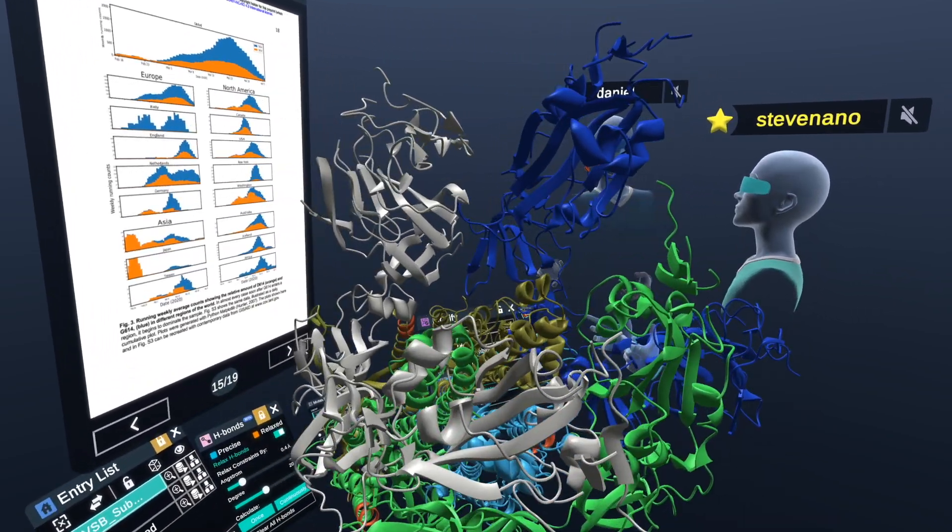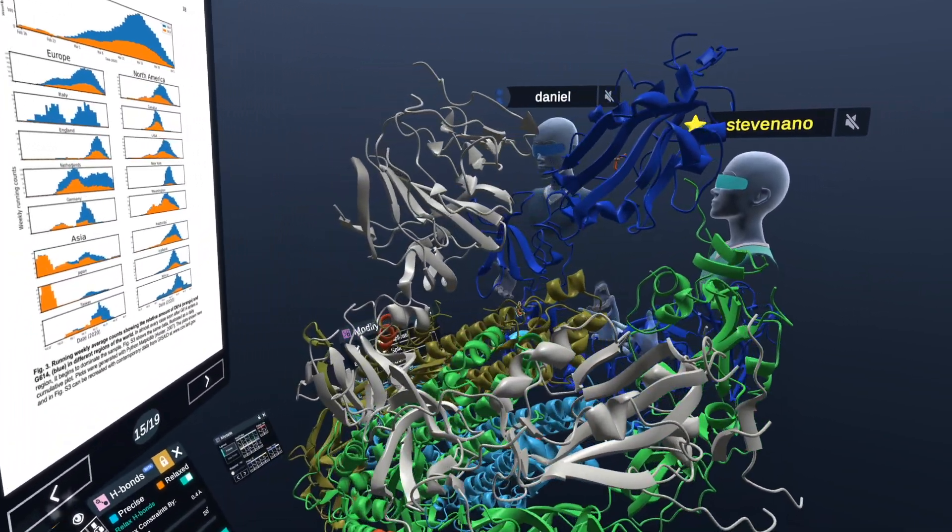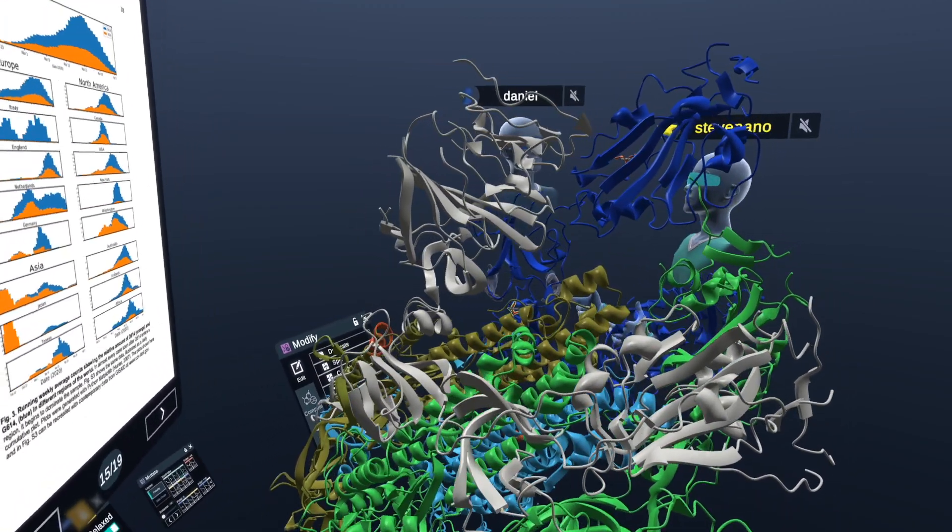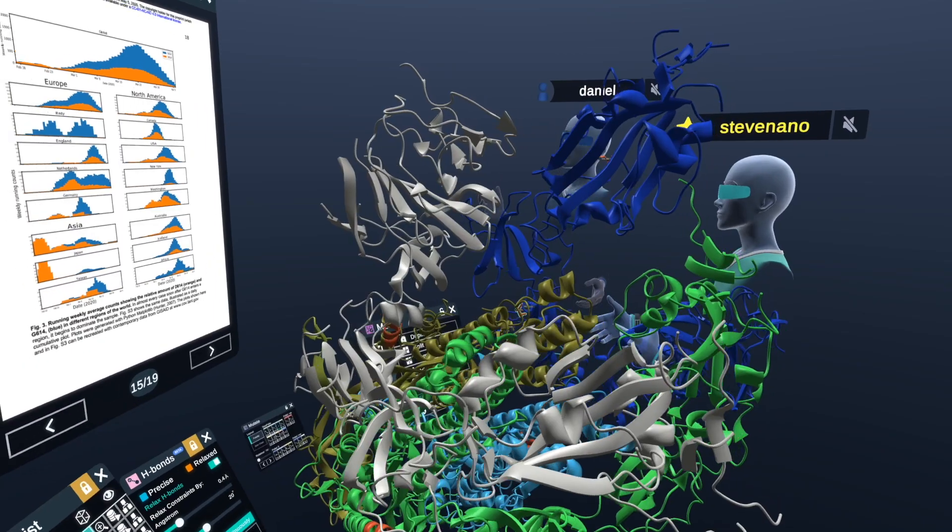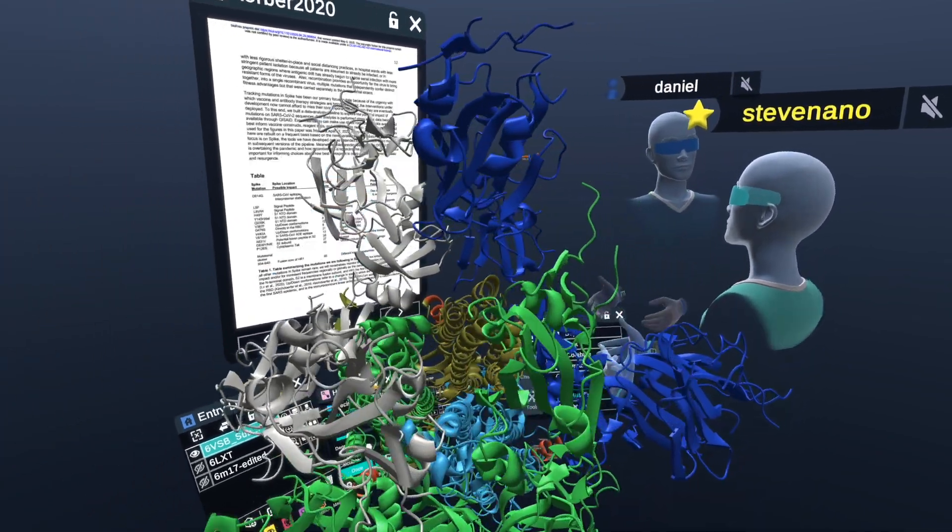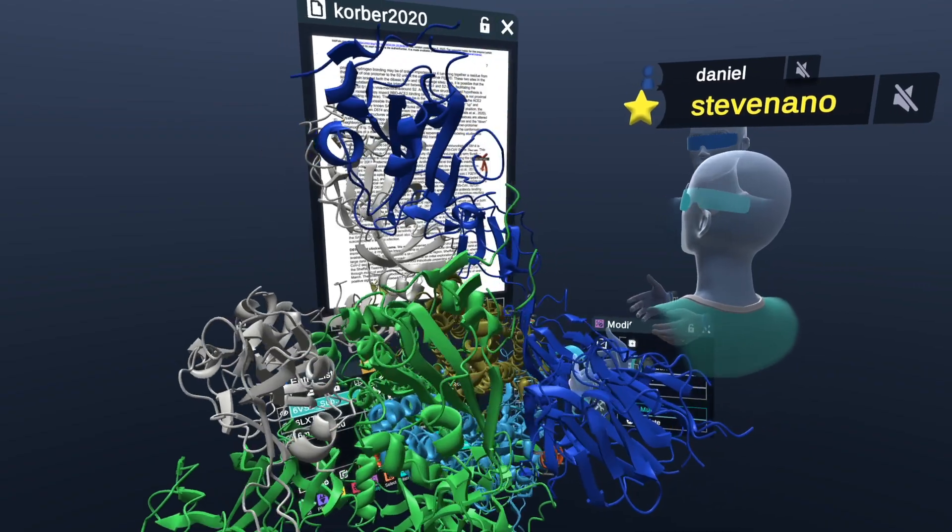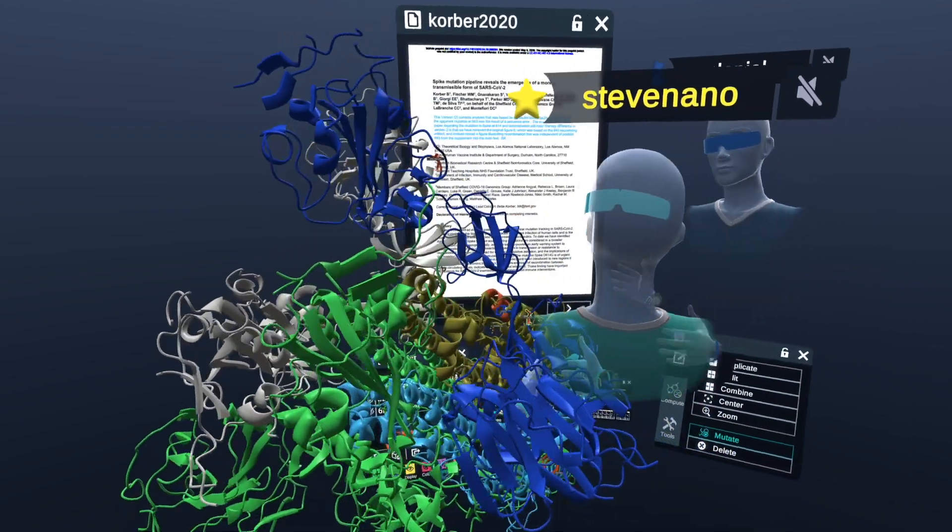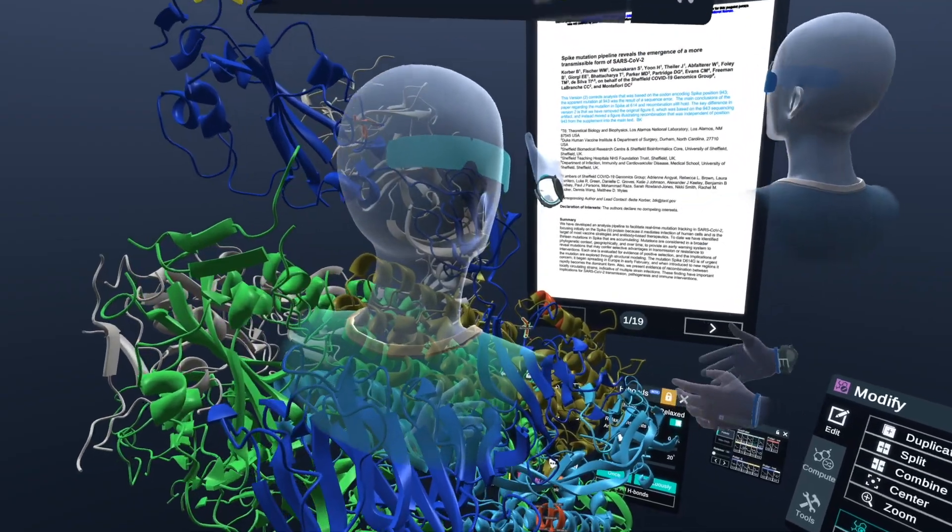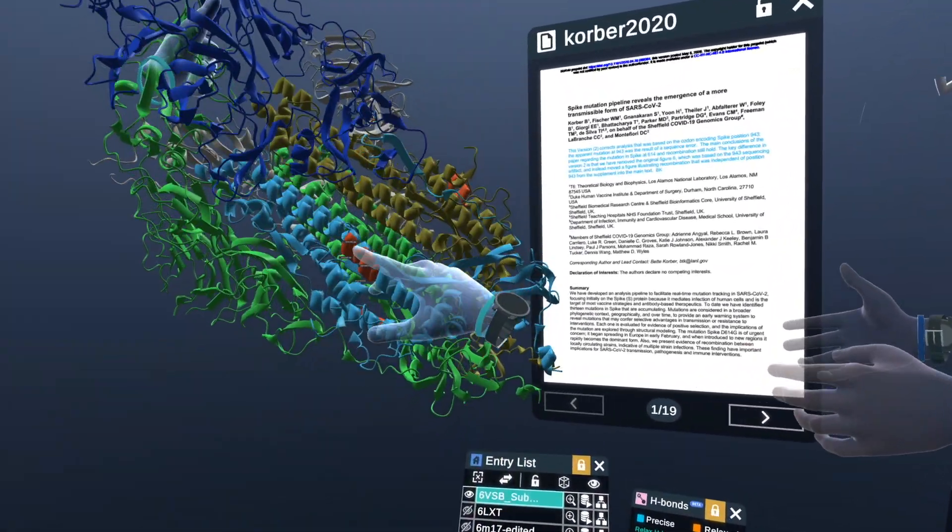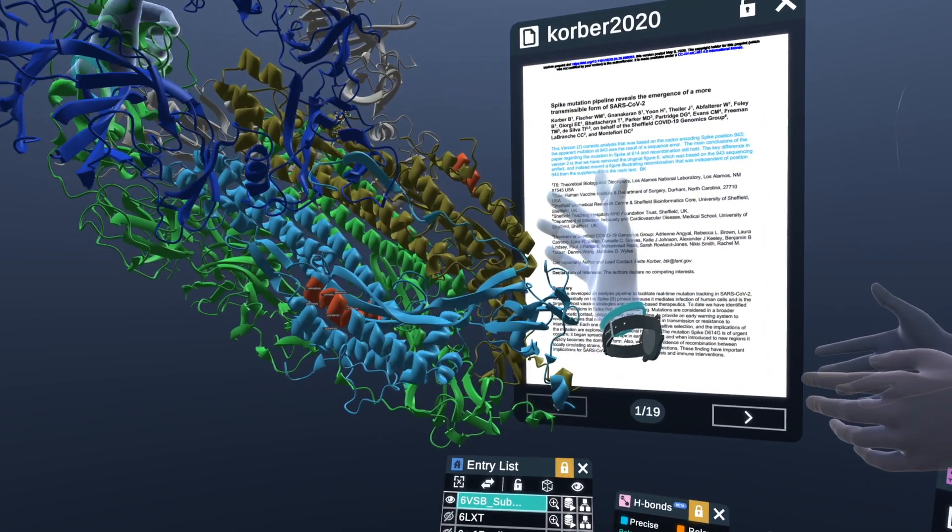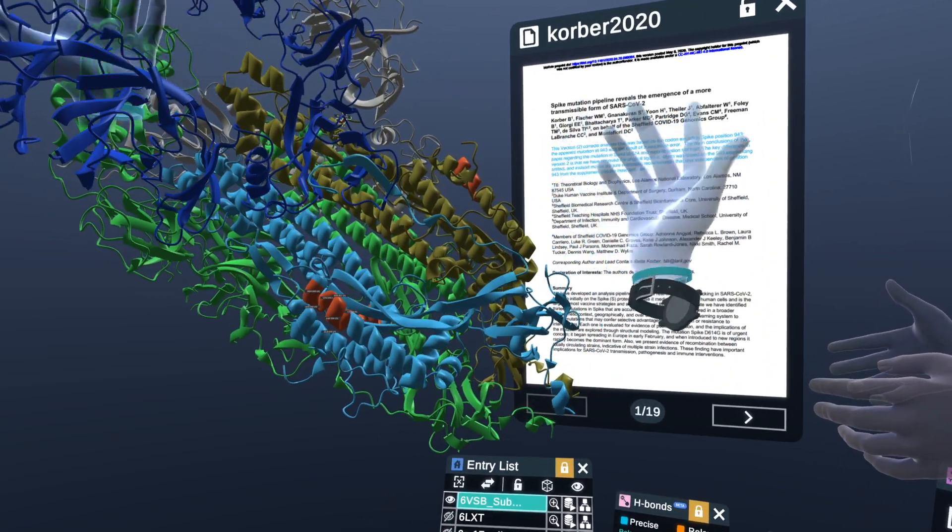And so what this data shows is not necessarily that this mutation provides with more transmissibility. That's the entire controversy here. But what it does show is that it's been a lot more successful, but that could be by something called in genetics the founder effect, or just plain luck, you know, this isolate was just luckier and just spread a lot further than the other one.